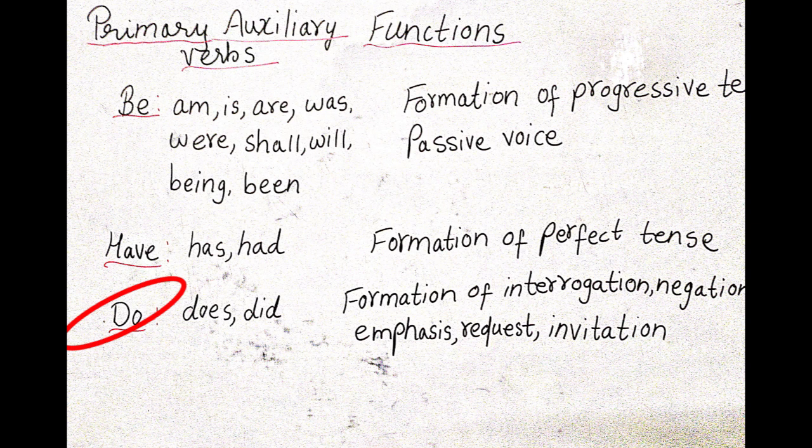Then forms of DO, that is DOES and DID. It is formation of interrogation and negation. Interrogation means asking questions and negation, it is negative. Emphasis means it puts stress on that particular word or the sentence or the meaning. Emphasis means putting stress. Then request and invitation. So these are the primary auxiliary verbs which have different functions.